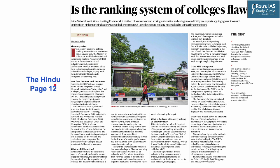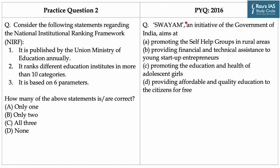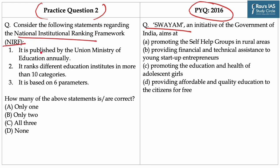Moving on to the second article of the day, which appeared on page 12 of today's Hindu newspaper. This article argues over the soundness of methods of assessment and scoring indicators of the National Institutional Ranking Framework or NIRF, and alleges that the ranking framework is not transparent. Governmental efforts to improve the education system are important from the exam's perspective, as seen from this PYQ of 2016 on the SWEM initiative. Here's practice question number 2: Consider the following statements regarding National Institutional Ranking Framework. Statement 1: It is published by the Union Ministry of Education annually. This statement is correct as NIRF was released in 2016 by the Ministry of Education and ranks India's higher education institutions every year.